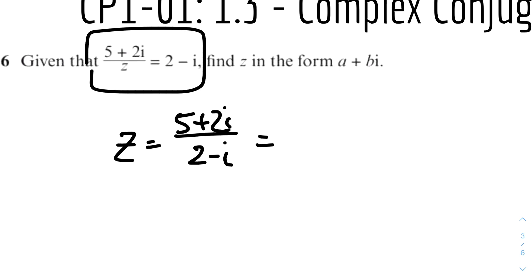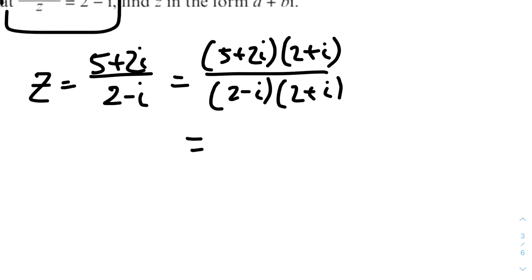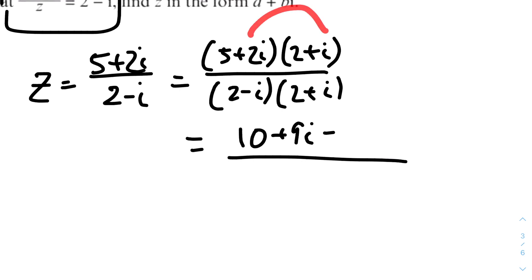So now we just rationalize the denominator — we times the top and bottom by the conjugate of the bottom. The conjugate of 2 - i is 2 + i. So the top: first term is 5 × 2 = 10, second term is 5i, third term is 2i × 2 = 4i, so 5i + 4i = 9i. And the last term is 2i × i = 2 × (-1) = -2.